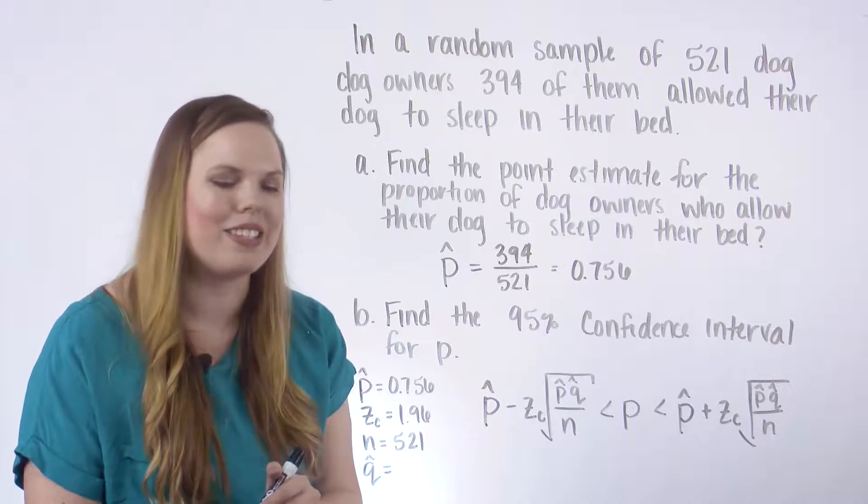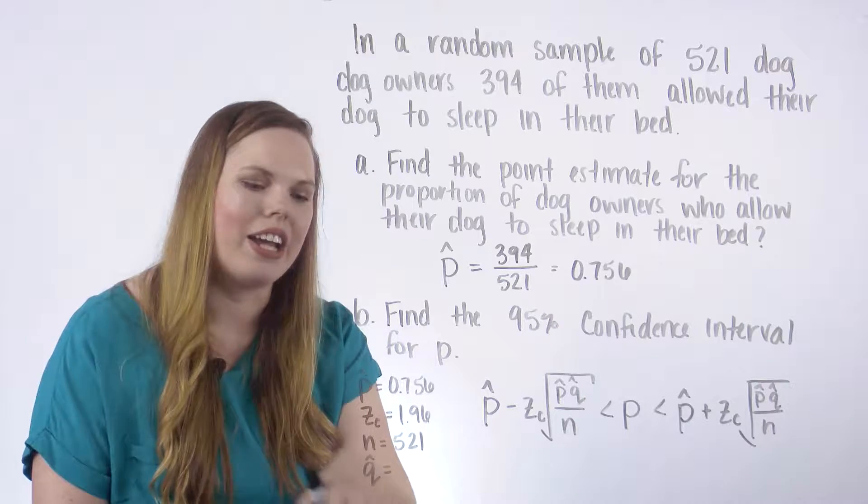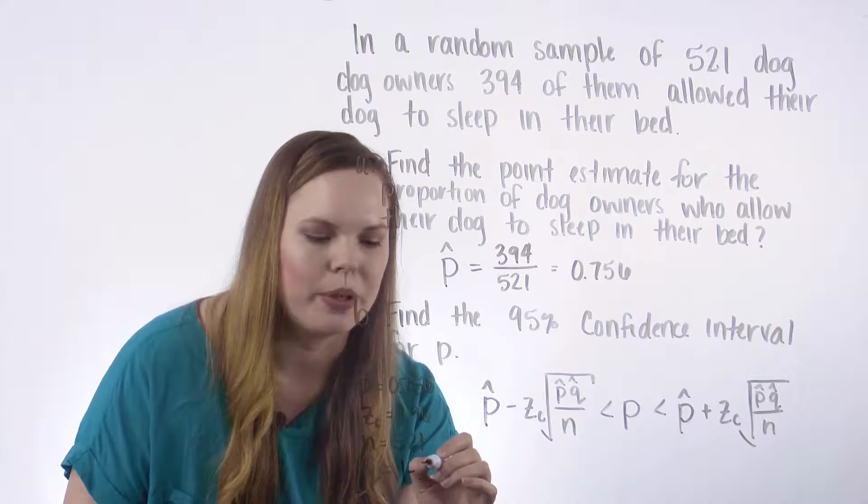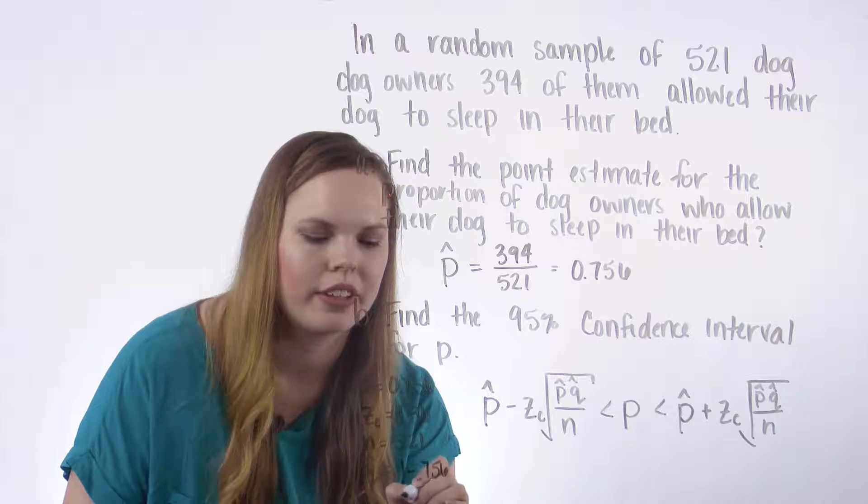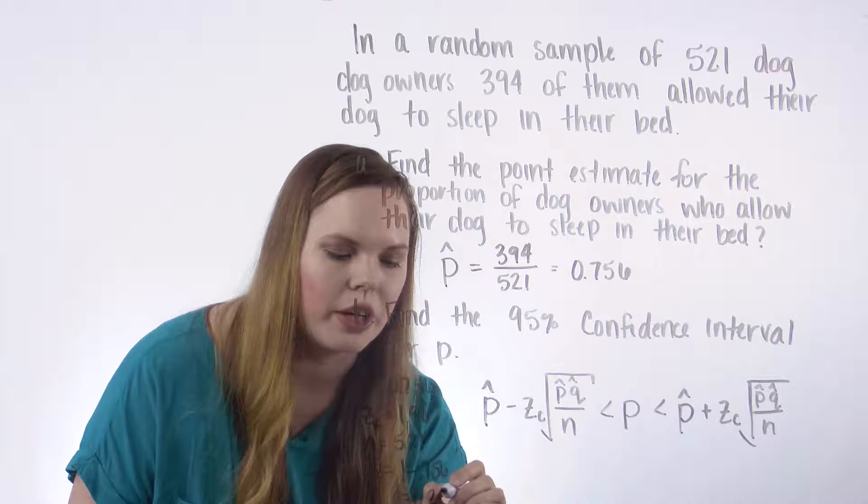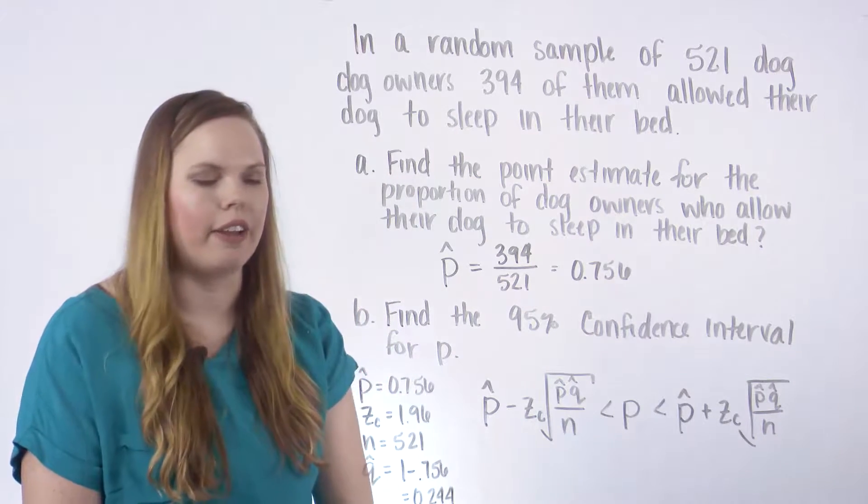So to get Q hat, I just simply take 1 minus P hat. So 1 minus 0.756. And I get 0.244 for our Q hat.